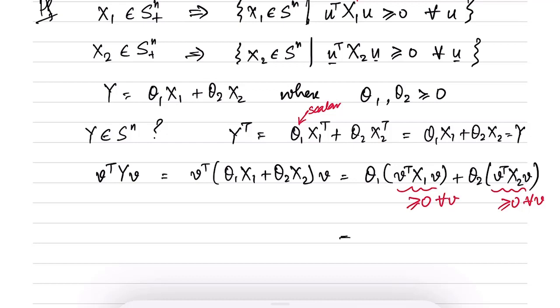So what does this imply? This implies that this whole quantity is also non-negative for all V because theta1 and theta2 are also non-negative. So in other words, we have established that V^T Y V is greater than or equal to 0 for all V.